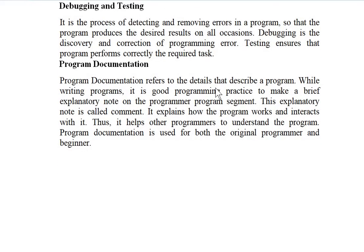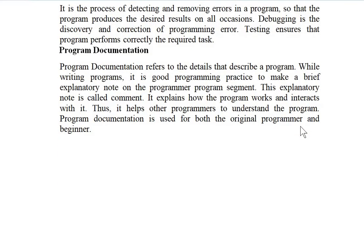The last step is program documentation. Program documentation refers to writing details about your program — whatever you have done, you maintain it in document form. While writing a program, it is good practice to make brief explanatory notes on the program segment, called comments. For example, if writing a program to add two numbers, you can comment above it: 'this is a program for summing two numbers.' This helps other programmers understand the program.